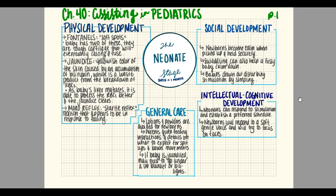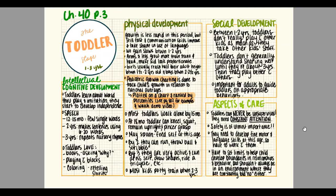Hey everyone, this is the Chapter 40 Assisting in Pediatrics lecture. We're going to walk through all of the maps for the different phases of pediatric development. There's a lot of stuff going on with kids, so we're going to start at the very beginning with the neonate stage. You'll notice as we scroll through these maps that they all have the same general format: physical development, general care, intellectual/cognitive development, and social development for each stage of childhood.